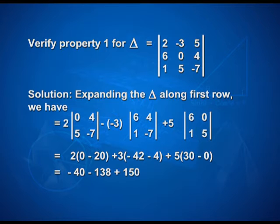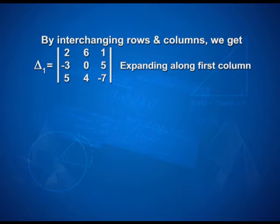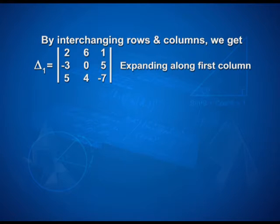This on simplification gives -28. Now, by interchanging rows and columns, we get determinant 1 with rows [2, 6, 1], [-3, 0, 5], [5, 4, -7].